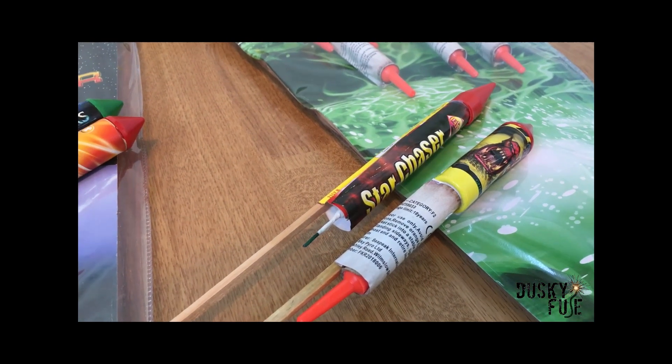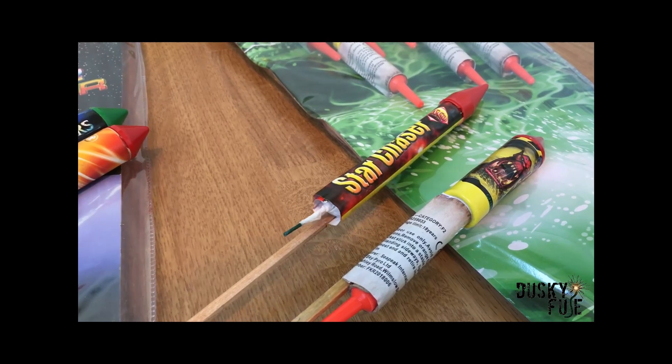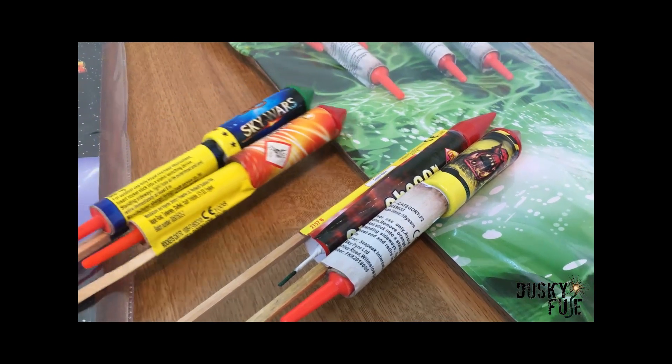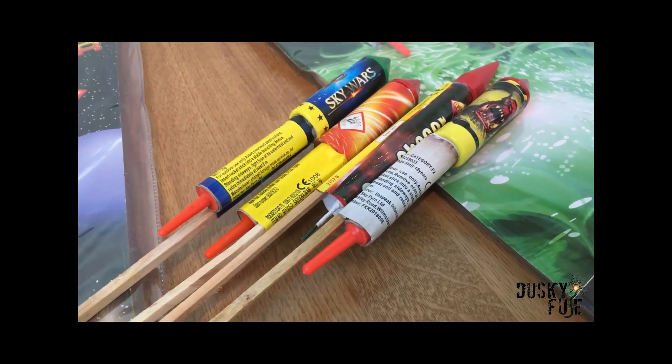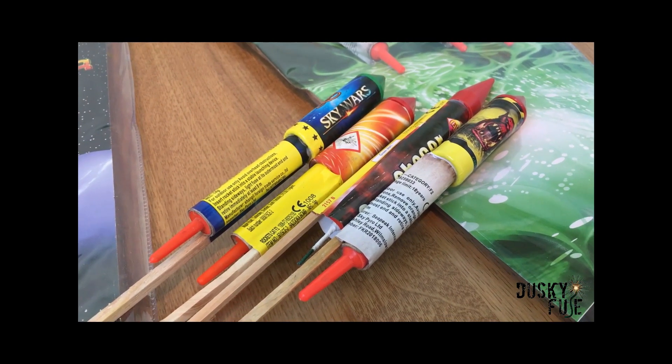Just for a laugh we also have an Esco Star Tracer. This has a Green Peony but just 9 grams of powder. The reason I'll be firing it amongst the other three rockets is just because it's of a similar size. So bear with me, we'll fire these rockets and we'll look at the difference between 1.3G and 1.4G.